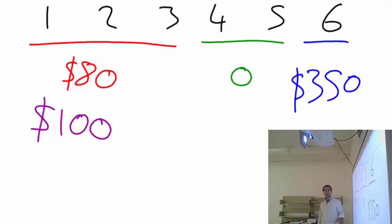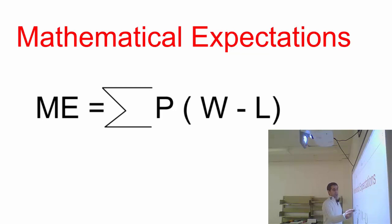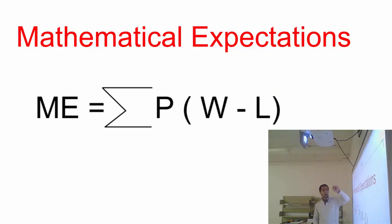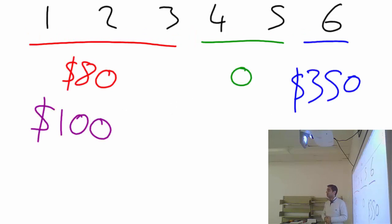Let's focus on whether this game is fair or not. The formula requires you to add up the probabilities — write down each probability, open a bracket, write down the money you will win, and subtract from that the money you will lose, which is your bet money. Let's set up the mathematical expectation for this game. We have options and their probabilities.